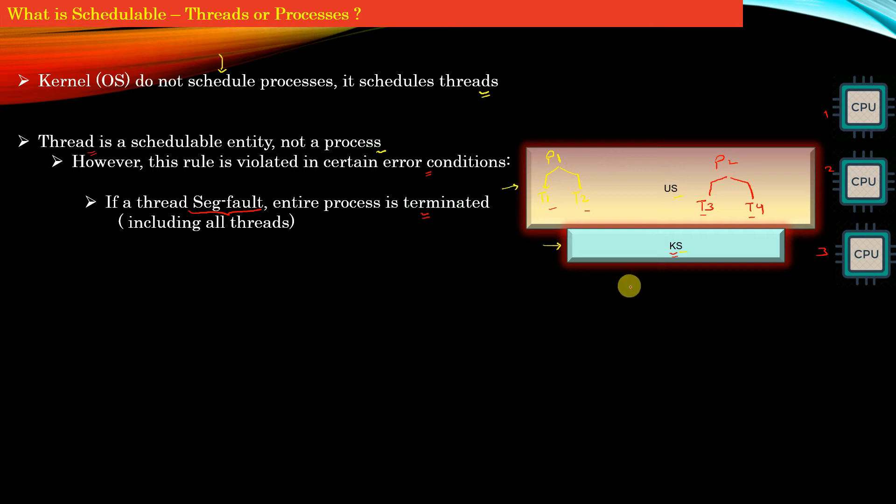In this example, suppose thread T1 does something illegal and is given a segmentation fault signal by the operating system. Then the entire process P1 will be terminated. This means that thread T2 pays the penalty for the crime committed by thread T1.